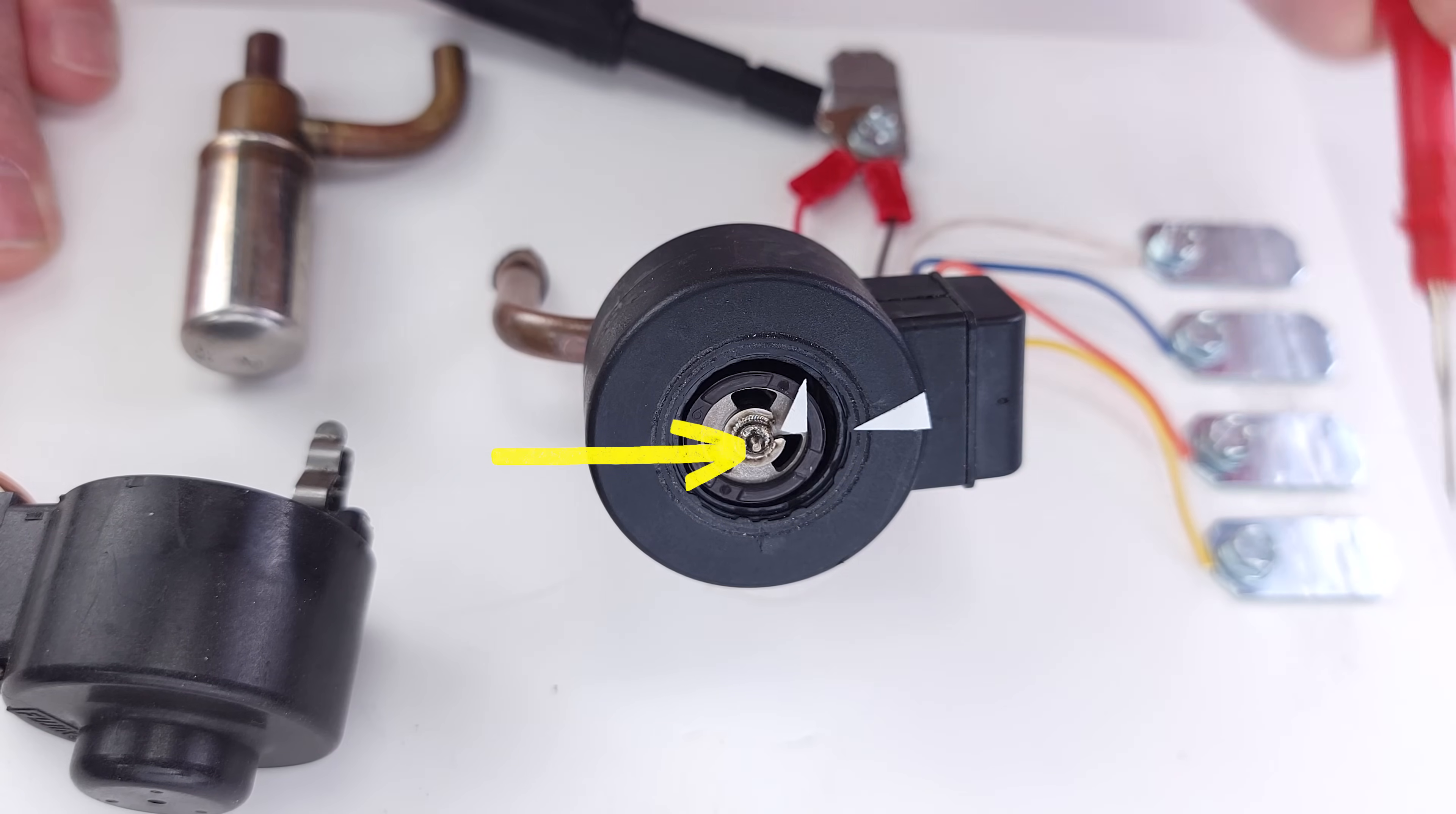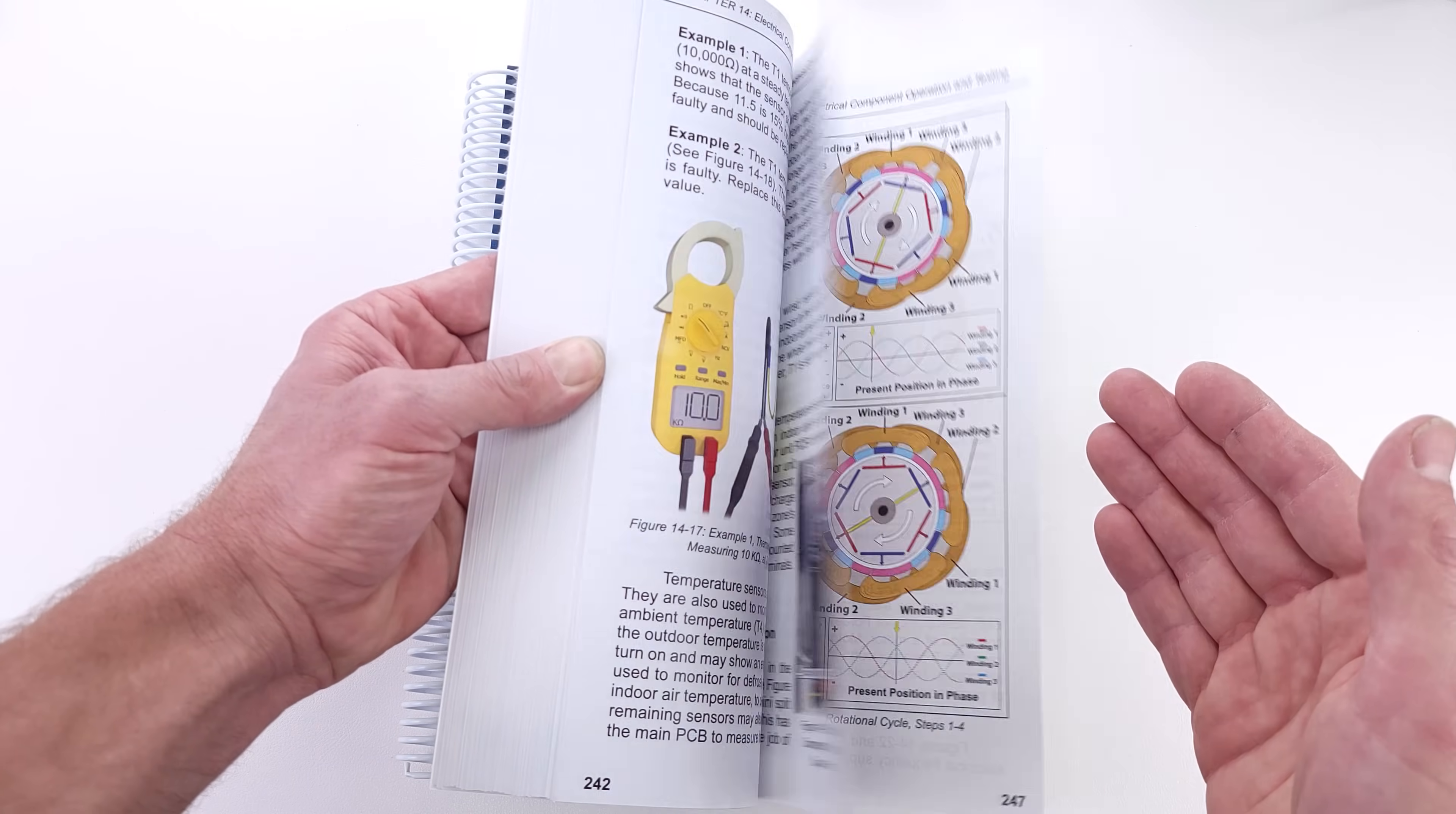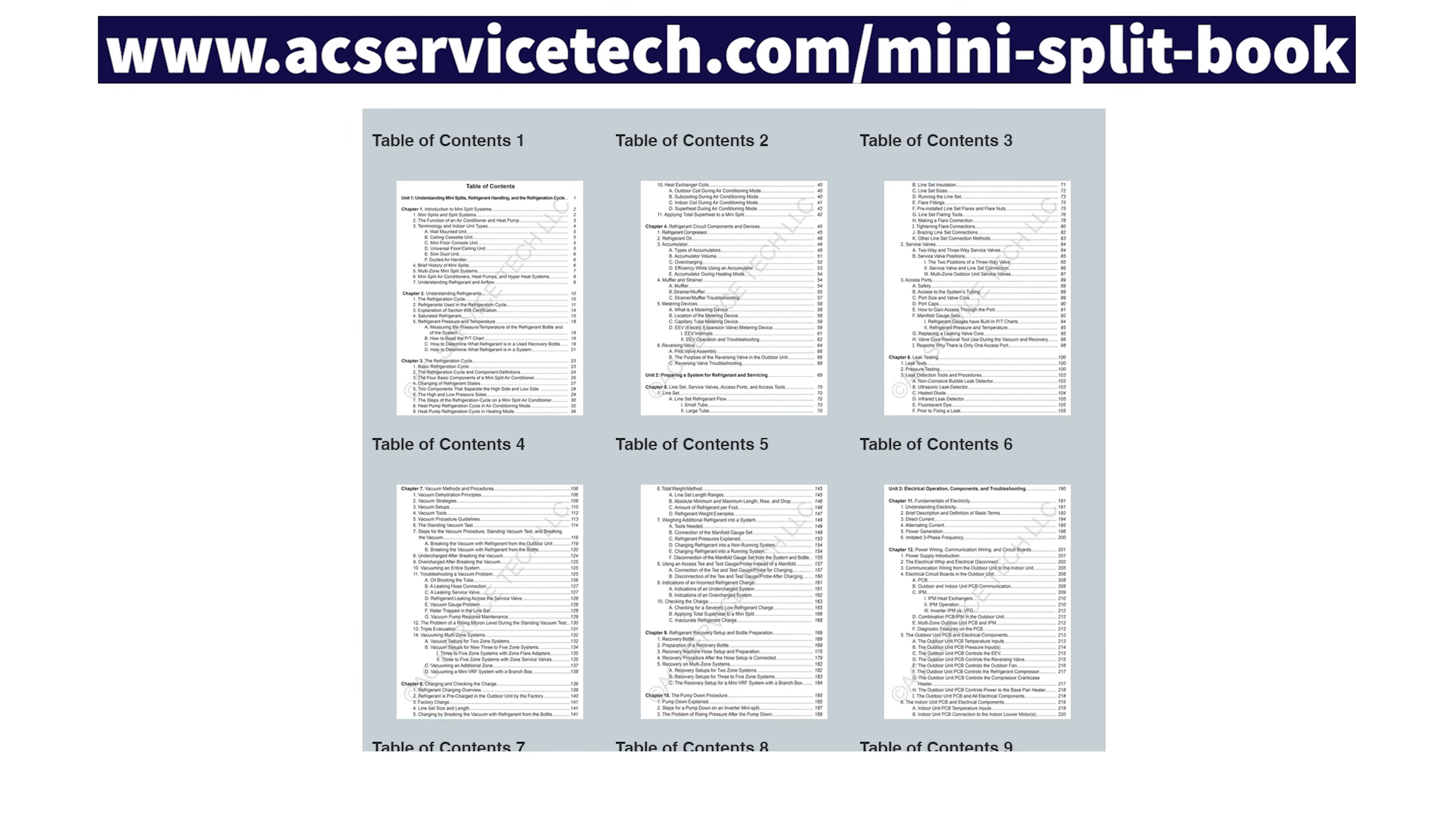An EEV is typically found on inverter systems and other high-efficiency HVAC units. Make sure to check out our new book on inverter mini-splits, where we go over the electrical operation of all the components inside, refrigerant-related practices, and many questions you may have concerning these systems. Check this out at acservicetech.com in the mini-split tab.